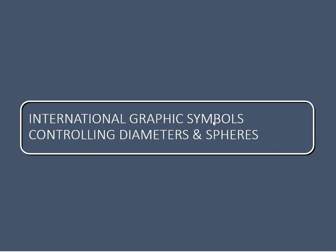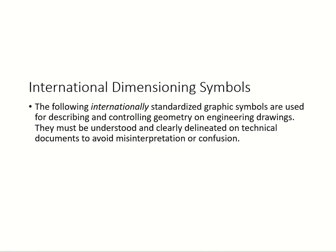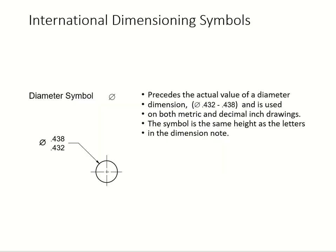Then we get into graphic symbols for diameter and spheres. We use symbols to dimension diameters and spheres — these are standard international dimension symbols used everywhere. The diameter symbol is shown here, with 0.438 and 0.432, and a leader line ending with an arrow pointing to the circle, telling you that circle has that diameter.